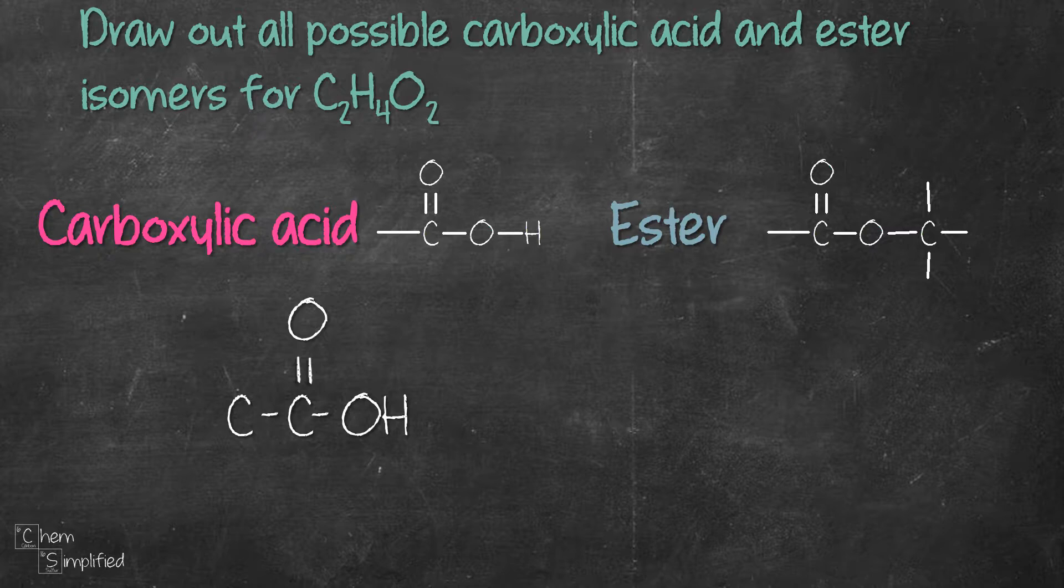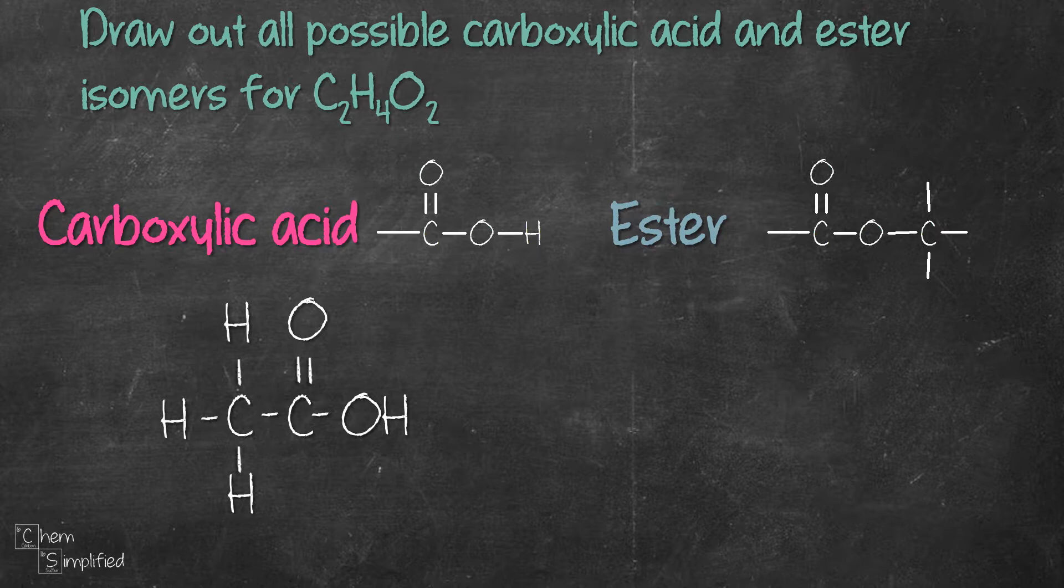So each carbon will make four bonds, so the carbon on the left is already connected to one carbon, so that means it will connect to three hydrogens like this, and it looks like we've completed our first isomer.